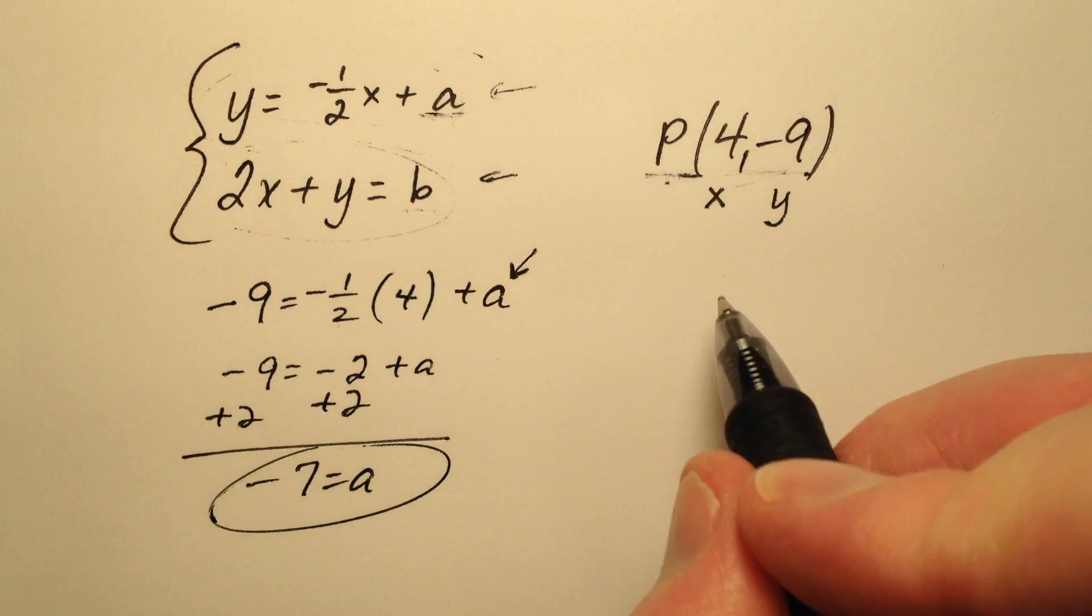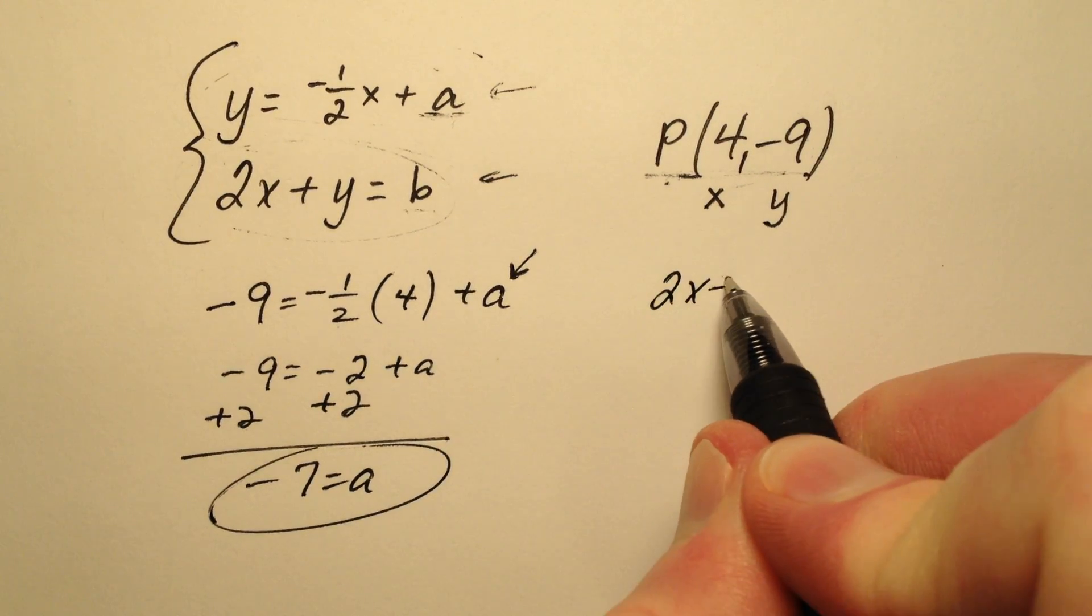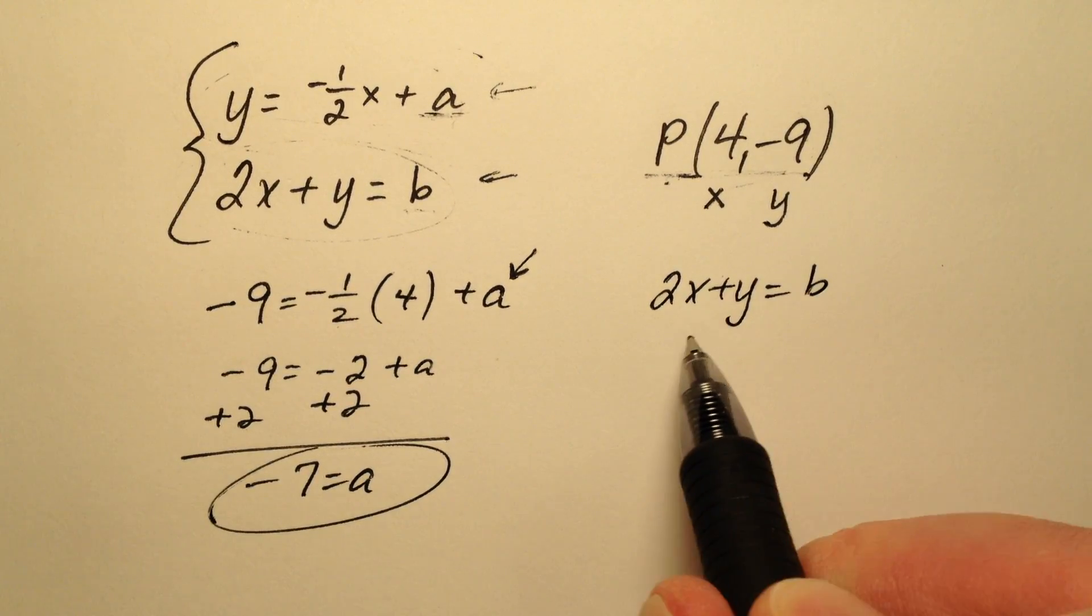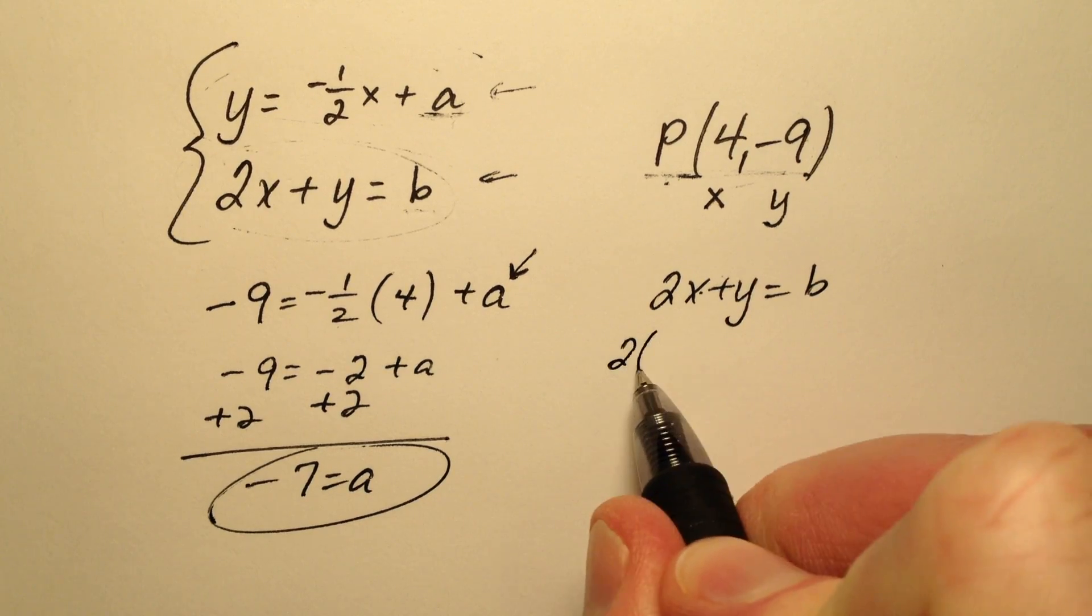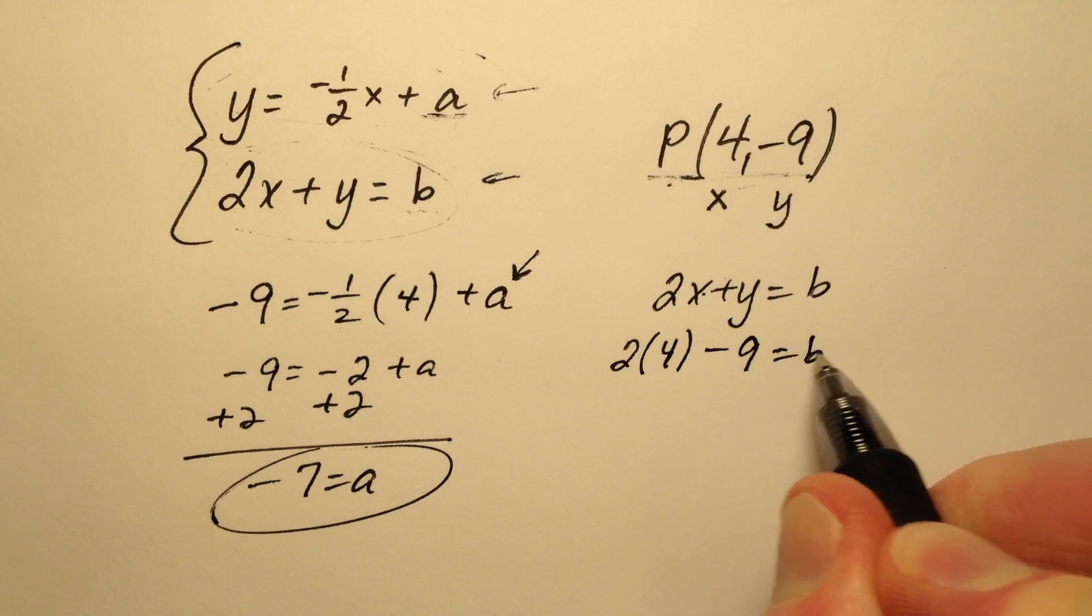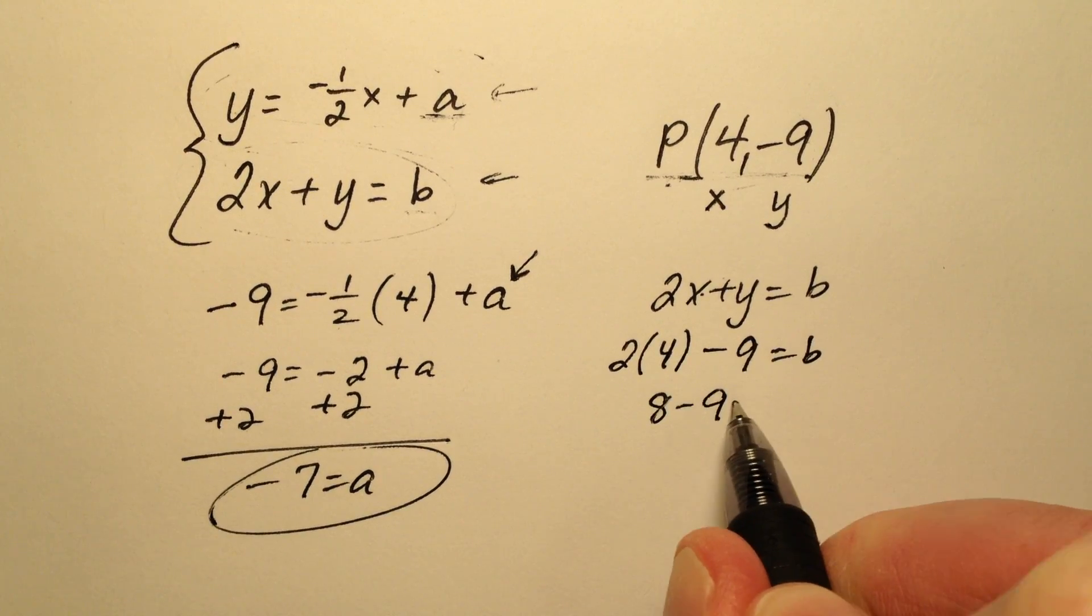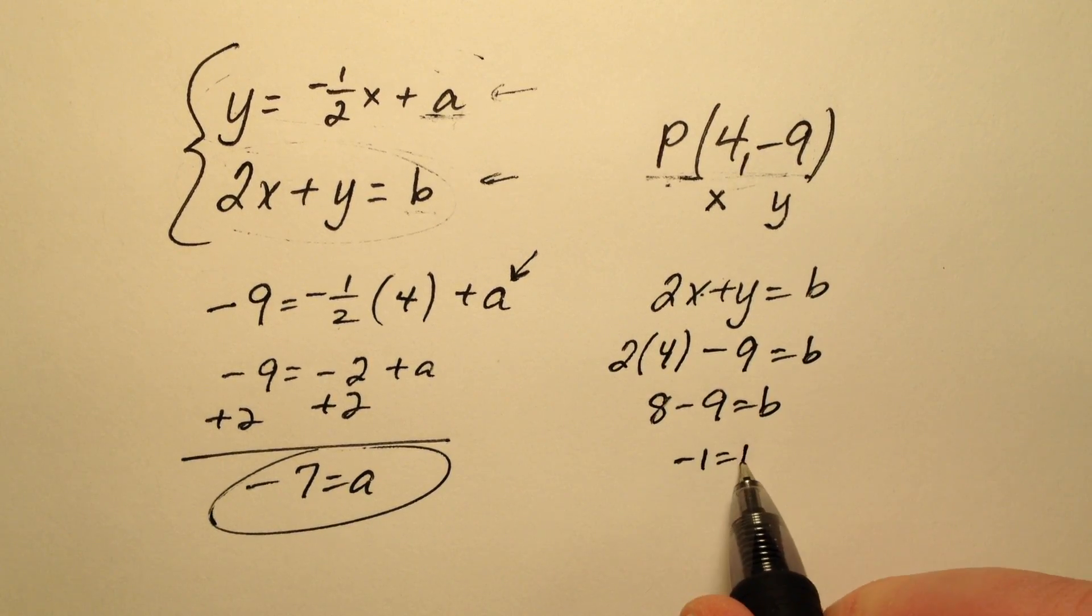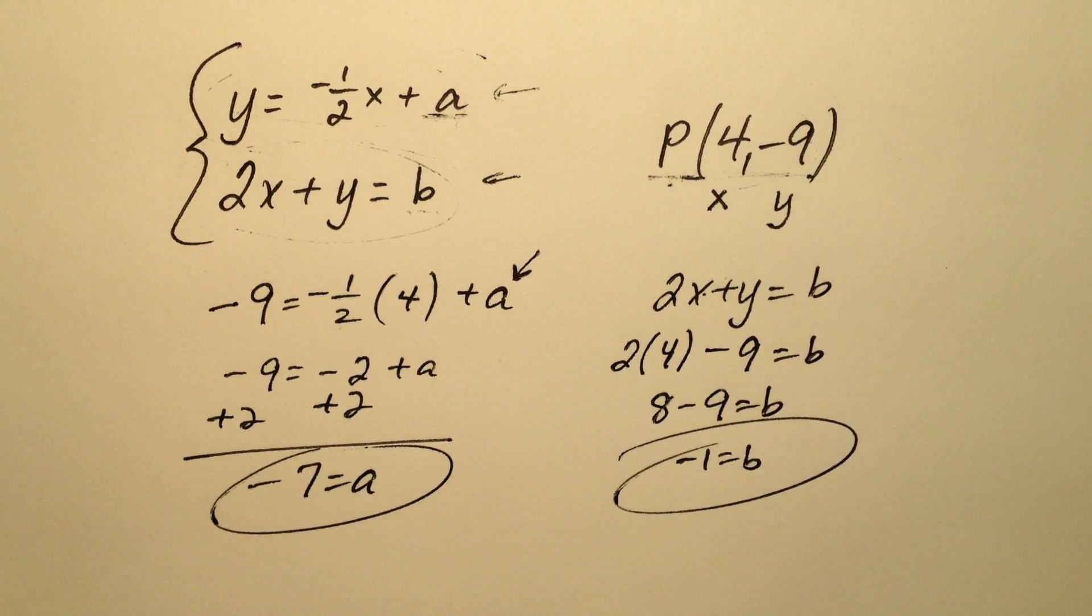Let's do the same with the second equation. I have 2x plus y equals b. My value for x is 4, my value for y is negative 9. So 8 minus 9 equals b. So it looks like b is going to be negative 1.